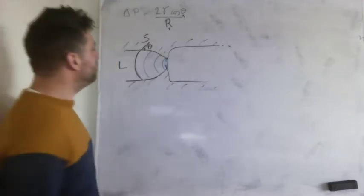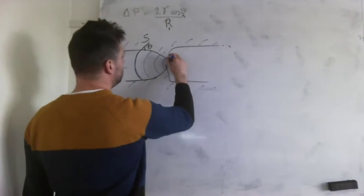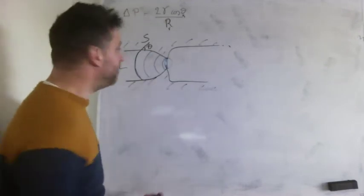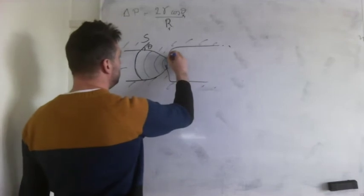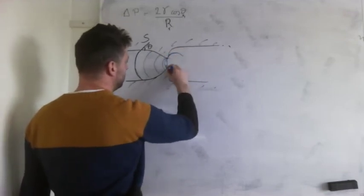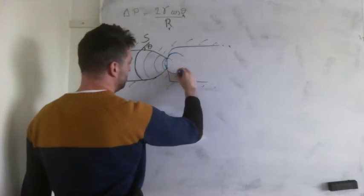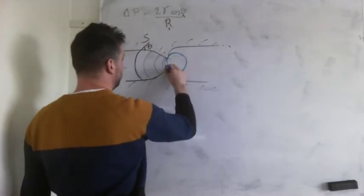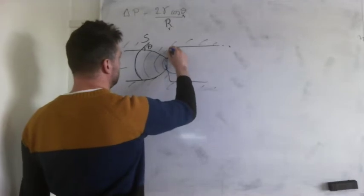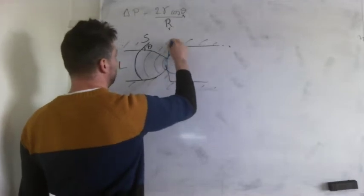But for the liquid to continue, what it needs to do, it needs to start increasing its surface, the liquid surface. And it will need to do that until it can assume a shape that looks something like this with a contact angle theta here. So then I assume this contact angle theta here.